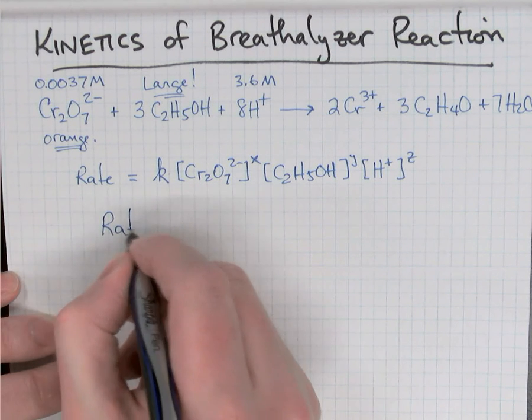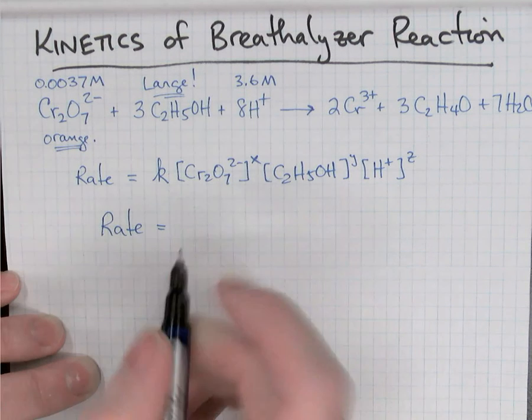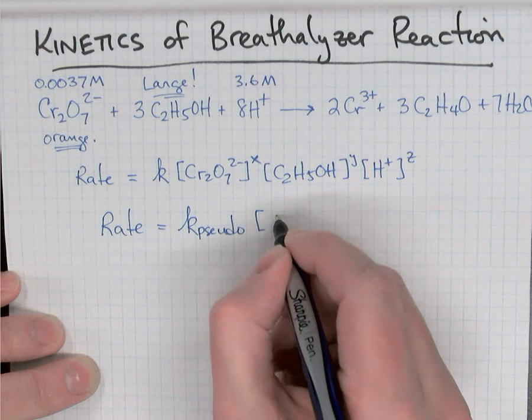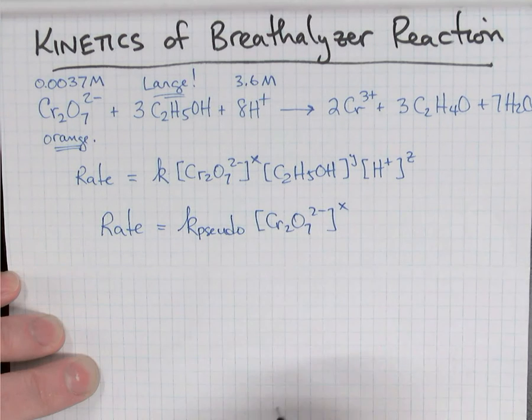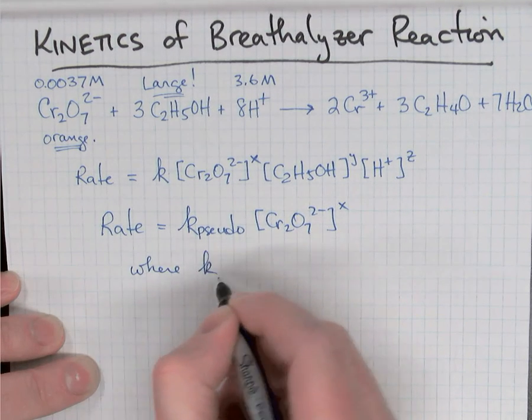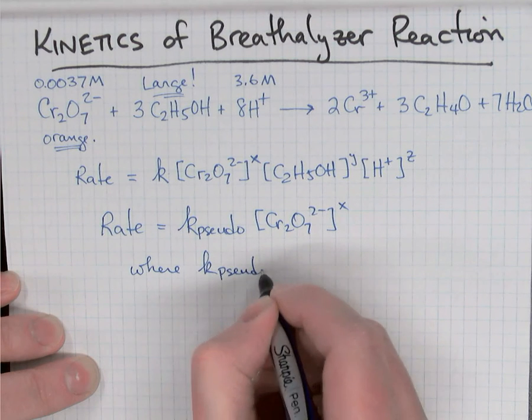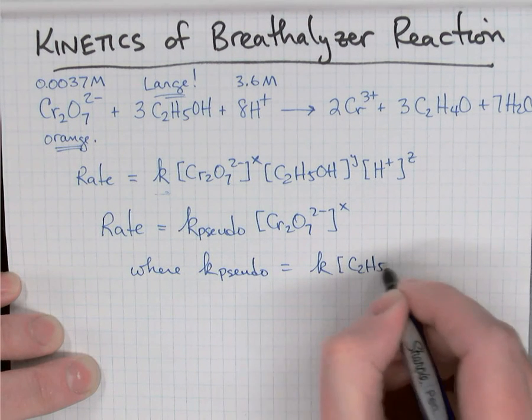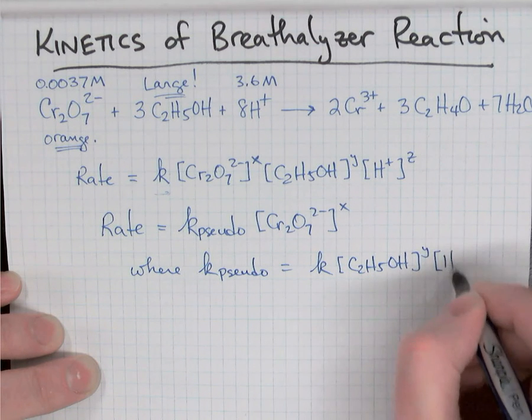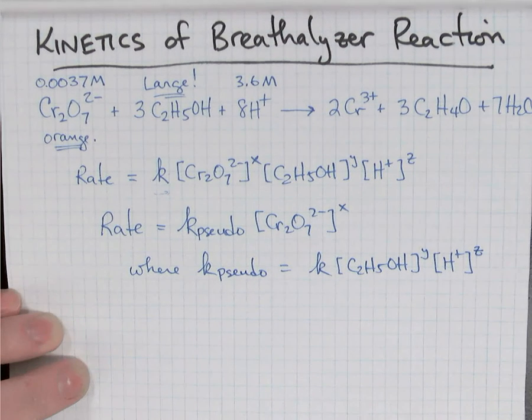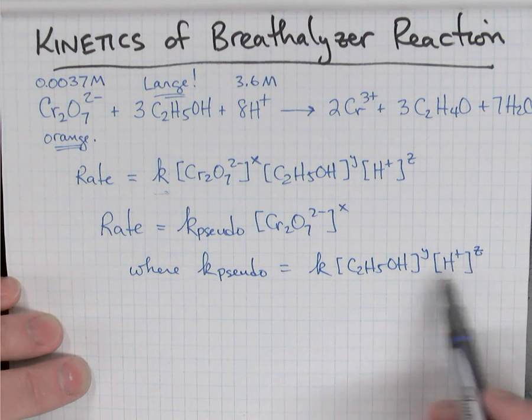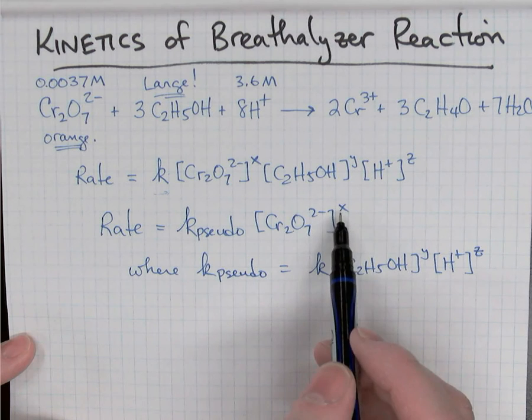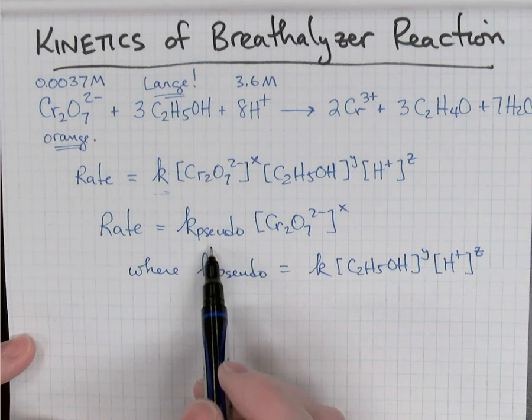If they don't change very much, we can combine these concentrations with their orders into the rate constant. And we get a simplified rate law, the pseudo rate law, k_pseudo times dichromate concentration to the power of x. Where the k_pseudo, the new rate constant, the pseudo rate constant, is actually equal to the old rate constant times the ethanol concentration to the power of y and the acid concentration to the power of z. In our experiment, we're not really going to be finding the orders for the acid or the alcohol, and we're not going to find the actual rate constant. Instead, we're going to find the order for dichromate, and we'll find the value of the pseudo rate constant under these conditions.